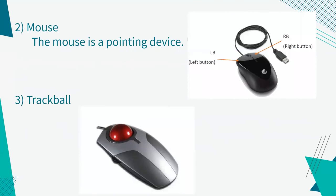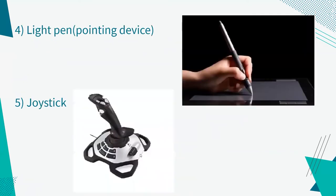Then you can see a mouse. The mouse is a pointing device. You can also see another input device, the trackball, which is very similar to the mouse and is also a pointing device. Then there is a light pen, which is also another pointing device.